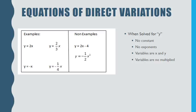So when we looked at our examples and our non-examples for equations, notice that they each have a y and an x, but they don't have a constant. They don't have an exponent. So those things mean that they are not a direct variation. So a direct variation has a constant, it doesn't have an exponent, and the variables are x and y, and the variables aren't multiplied.